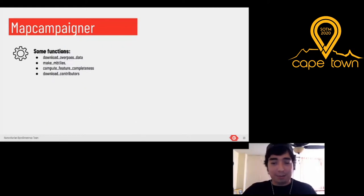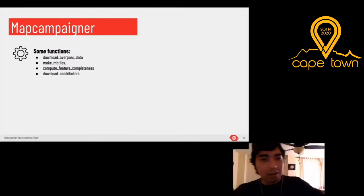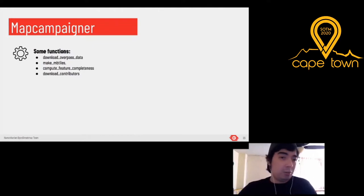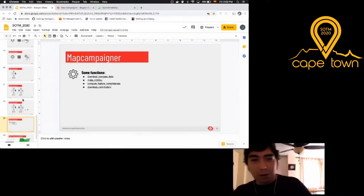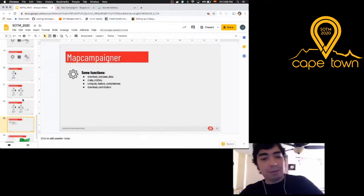We get a list of functions executed one by one in a serverless architecture, so we don't need a dedicated running server. They run on demand — every time we need to update, we press a button and start updating the data. This can also run on a schedule: for example, every 30 minutes, every hour, or every two hours, the status of the campaign is updated. That's a general explanation of how it works, and that's everything I wanted to show about Map Campaigner.